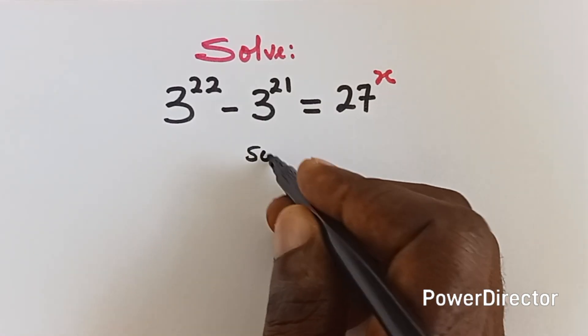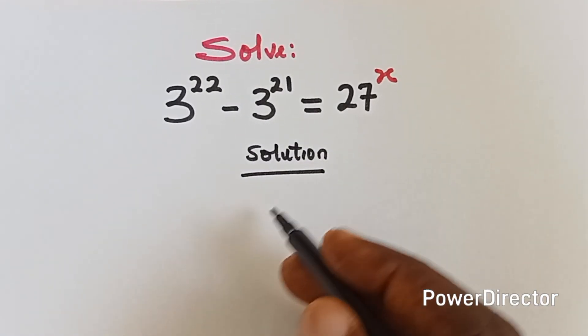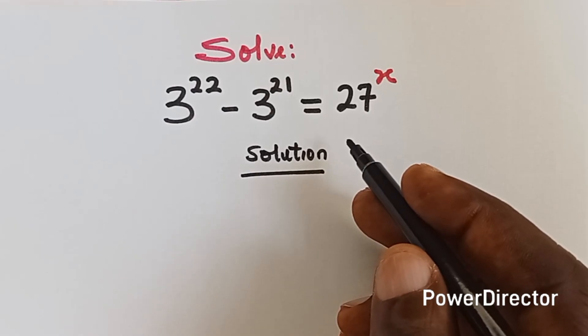Okay, so we don't solution. All right, so we have 3 raised to power 22 minus 3 raised to power 21 equals to 27 raised to power x. We want to find x.